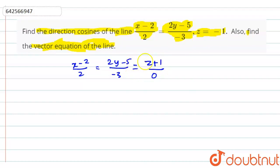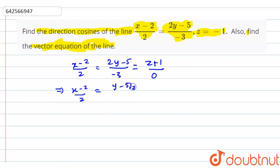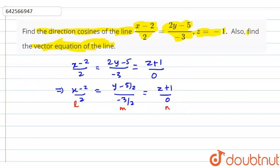Now, I'm going to simplify y so that I can find the value easily. We'll have x minus 2 by 2. When I take 2 as common, I will have y minus 5 by 2. Let me bring that 2 to the denominator side, so we'll have minus 3 by 2, which is equal to z plus 1 by 0. Here we have found L, M, N.